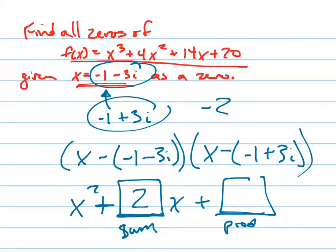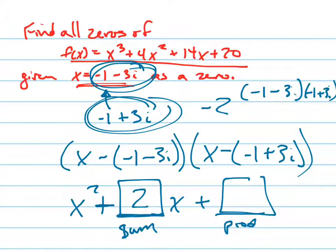And the product of these two zeros, multiply them out: negative 1 minus 3i times negative 1 plus 3i becomes positive 1. These insides and outsides cancel out because they're conjugates of each other.